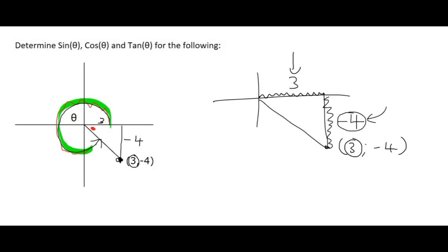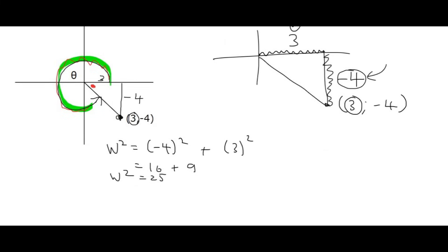We can then use Pythagoras to find the diagonal. So I'm going to call that diagonal W, and that's going to be equal to minus 4 squared plus 3 squared. And that's going to give us 16 plus 9, which is 25. And if you take the square root of 25, you would end up with 5.